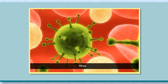Viruses are different from other microbes. They can multiply and grow only inside the cells of another living organism. As long as they are outside in the surroundings, they cannot grow or multiply and are just like any non-living thing. For this reason, they are usually called borderline organisms between the living and non-living.